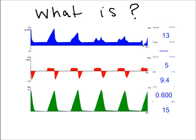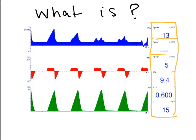What is plateau pressure? Plateau pressure is the static trans-respiratory pressure at the end of inspiration during an inspiratory hold maneuver or an inspiratory pause setting. There is no measurement displayed at the time because we need to perform an inspiratory hold or set an inspiratory pause during the inspiratory phase.